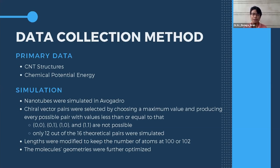For our data collection method, we settled on two types of data: CNT structures in the form of images, and chemical potential energy as calculated by Avogadro. Chiral vector pairs were selected by choosing a maximum value of 3 and producing all variations, with a few exceptions. In theory, we would have 16 different CNTs to simulate; however, either N or M must be greater than 1, meaning pairs (0,0), (0,1), (1,0), and (1,1) are not possible. Therefore, only 12 out of 16 theoretical pairs were simulated. The lengths of these CNTs were modified to keep atom count at 100 or 102, since the next lowest option of 96 is further from 100.